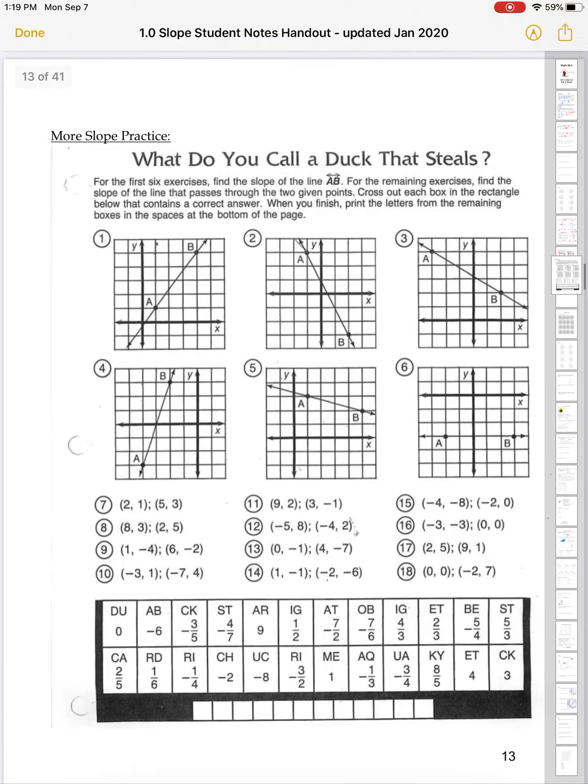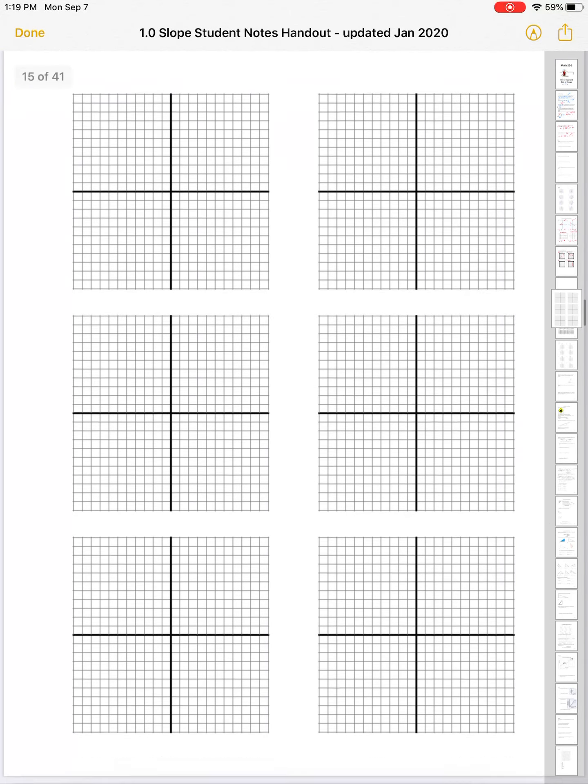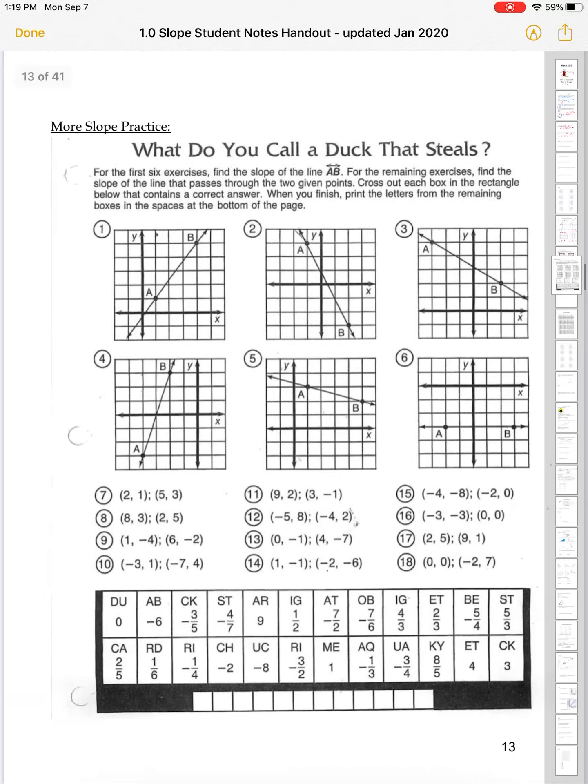Now, your assignment, you're going to do, what do you call a duck that steals? For the 7 through 18, you can use these grids. You might need to use them more than once. I think there should have been two pages. And then you can figure out what that special message is. So that's undefined.